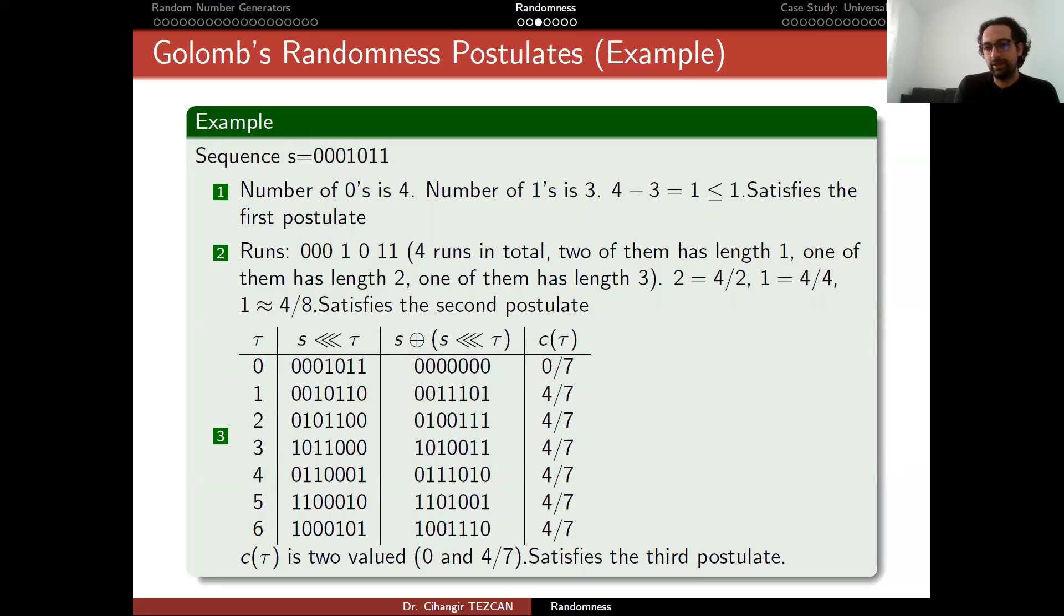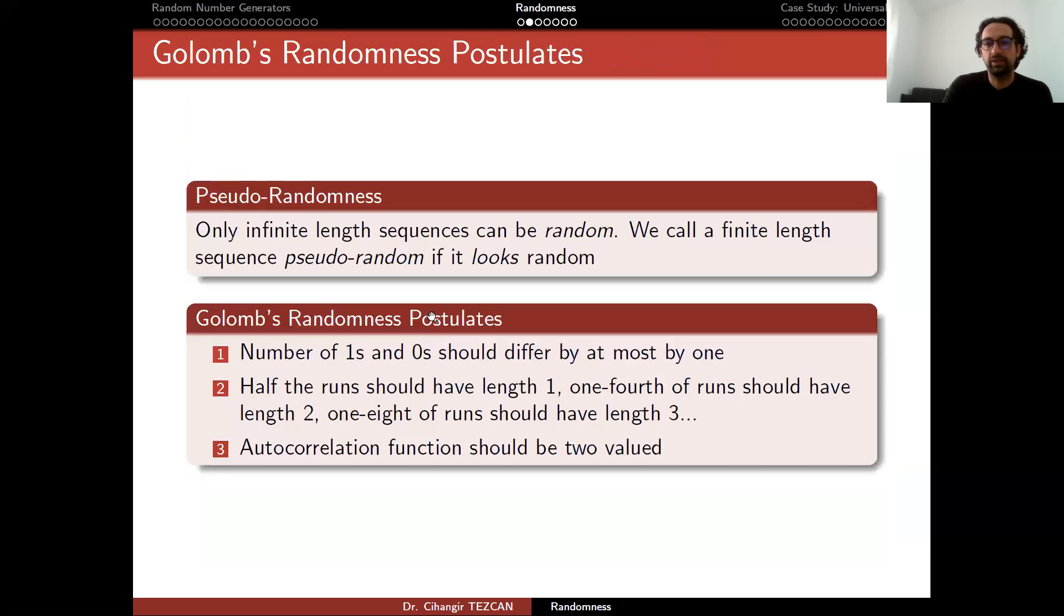So these are postulates. But now these are not good enough to determine if something is random or not. Because for instance, if you change this one with zero, then it will fail this first postulate. But it is not a good thing to say that it is a bad sequence because it doesn't look random. So we have to have an error margin somehow. Because this is a very strong definition saying that number of ones and zeros should differ by at most one.